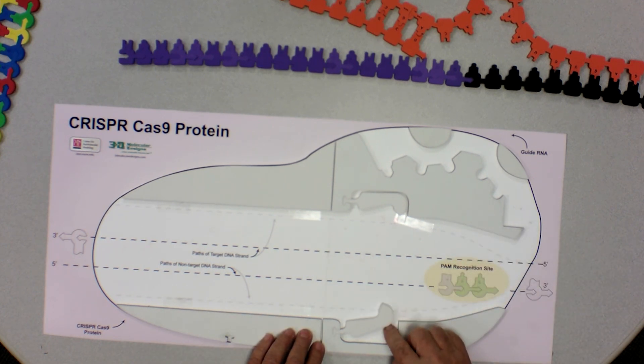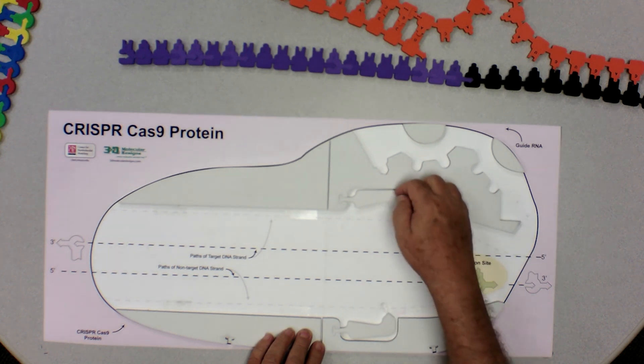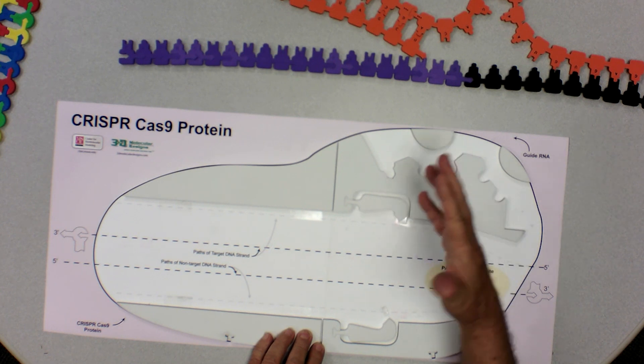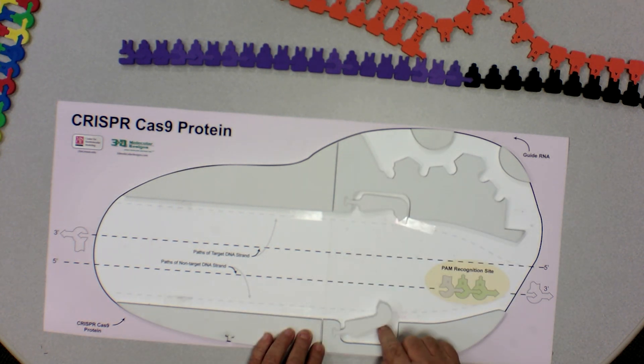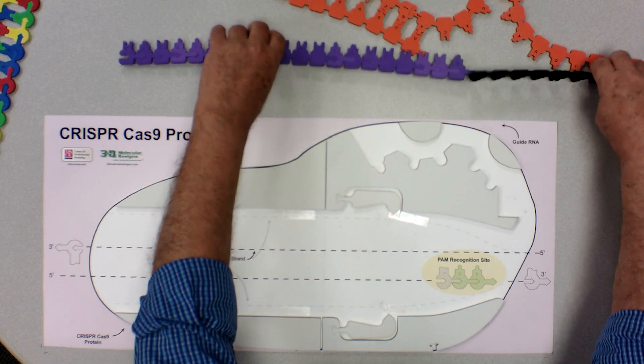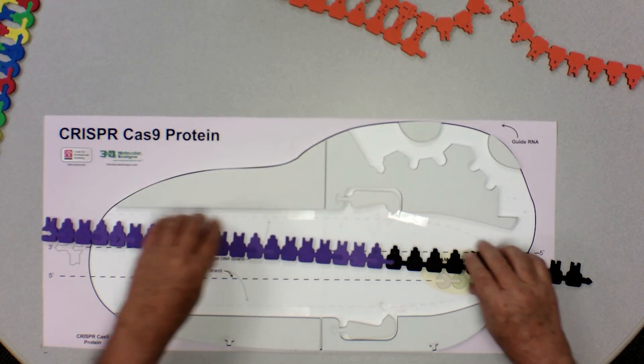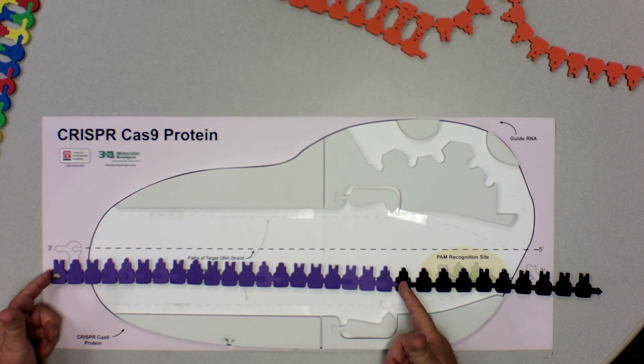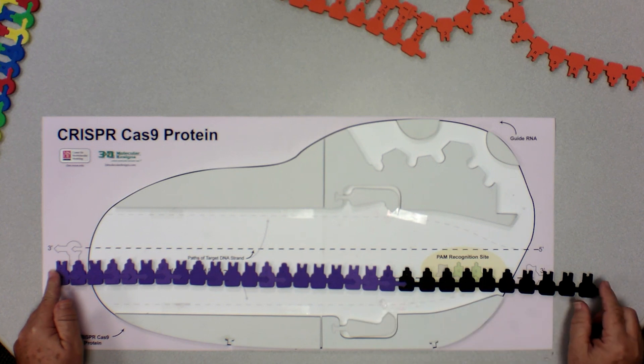It's an endonuclease, meaning it has two active sites: one that will cut what we call the target strand — one of the two strands of double-stranded DNA — and the other one cuts the non-target strand. So it's an endonuclease, but it doesn't just run around loose in a cell cutting any DNA that it finds. That would be disastrous. This Cas9 is programmed by RNA to only cut DNA which is exactly complementary to the first 20 nucleotides of what we call CRISPR RNA.